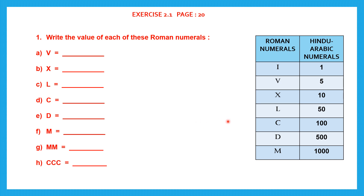Look at this table on the right. This table has two columns — in one column we have the Roman numerals, and in the other column we have the Hindu-Arabic numerals. In the Roman numerals column there are seven numerals. These are the seven basic Roman numerals which all of you should know. I is 1, V is 5, X is 10, L is 50, C is 100, D is 500, and M is 1000. You have to learn up this table by heart so that it will be easy for you to work out questions like this.